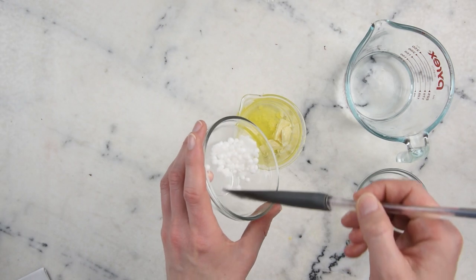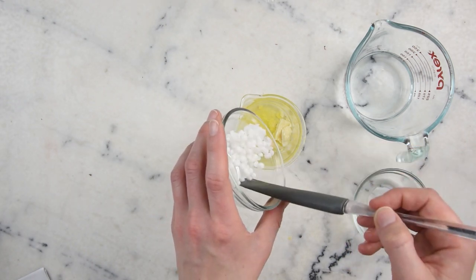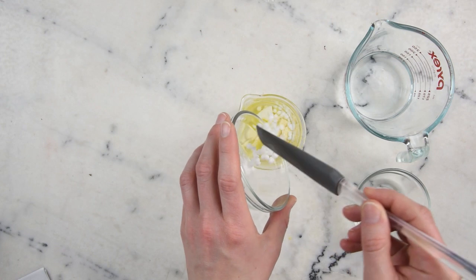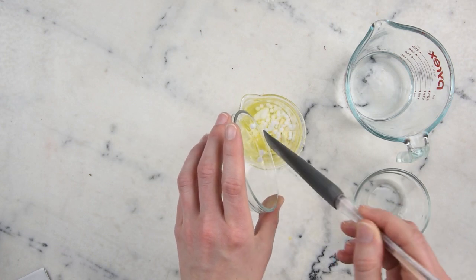And then this here is 6 grams of emulsifying wax NF. And you can use any other complete emulsifying wax. So you could use BTMS 50, reed emuls, or polawax instead.